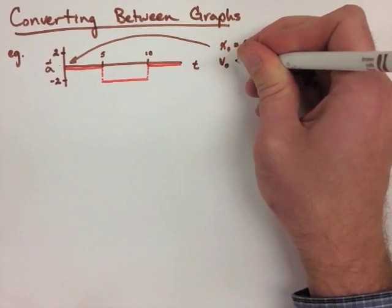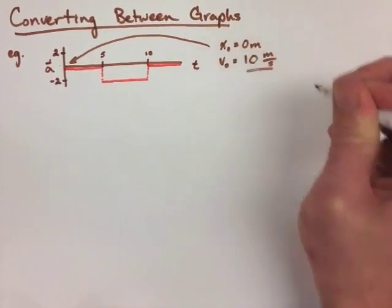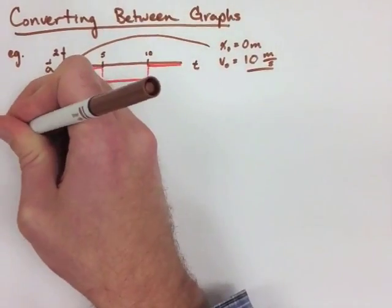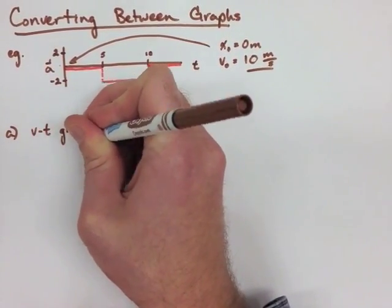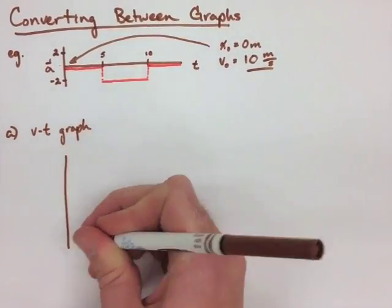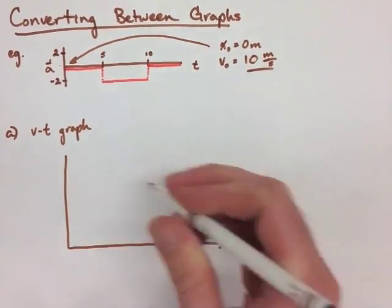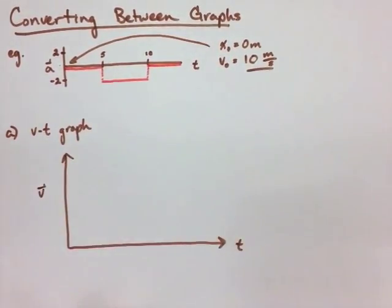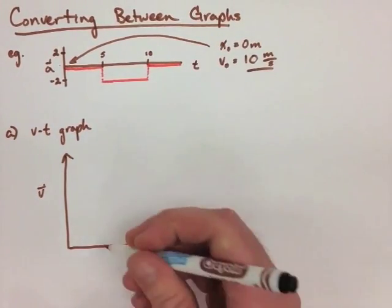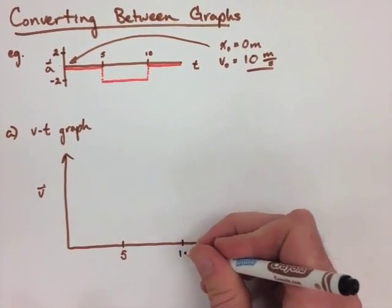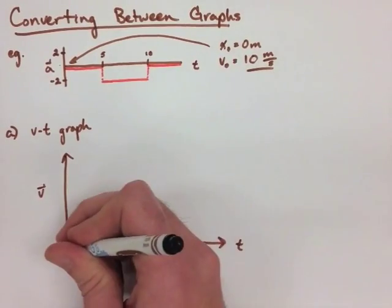It's important to note that we already have a velocity of 10 meters per second when we start. So when we're making our velocity time graph, we need to make sure that we go up to at least 10 meters per second, as we only show deceleration in this section of the graph. So we know we aren't going to go any faster than that.